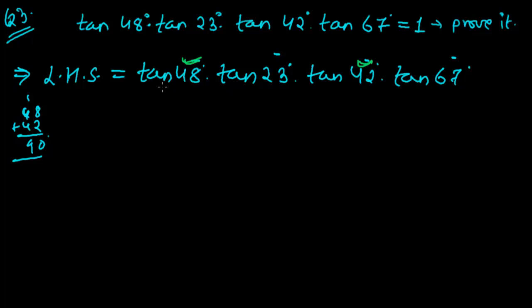Again, let me check 23 and 67. Let me add these: 7 plus 3 is 10, carry over 1, then 2 plus 1 is 3, and 3 plus 6 is 9—it's 90 again. So 23 and 67 are also complementary, meaning this 67 and this 23 are both complementary angles.